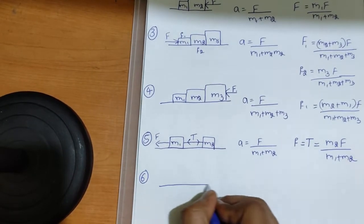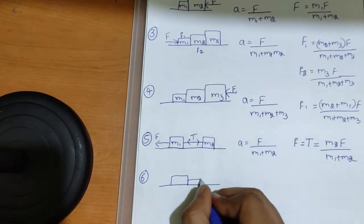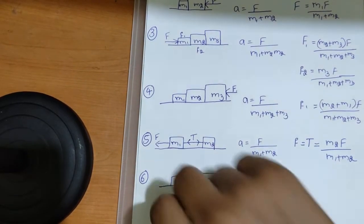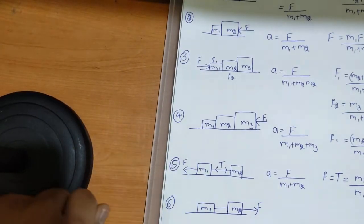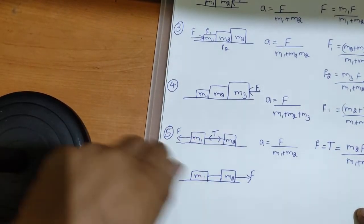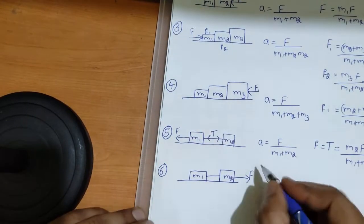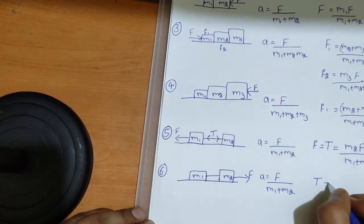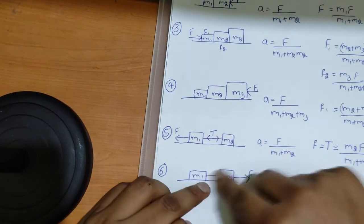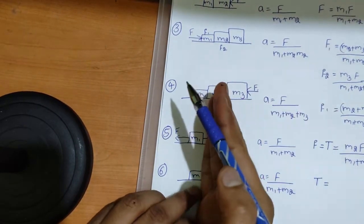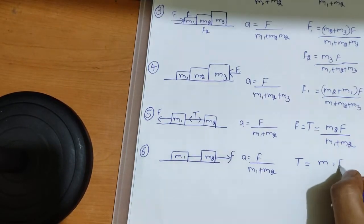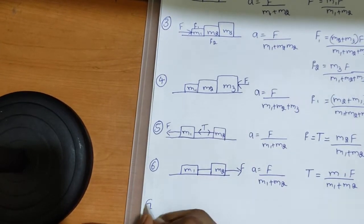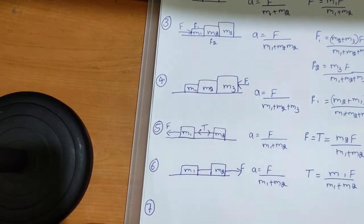Now I'll reverse the situation. With m1 and m2, I am dragging from the right side — dragging m2. Acceleration is the same. Now tension: here I'm pulling m2, so forget m2. What is left is m1. So tension equals m1 times F by m1 plus m2.